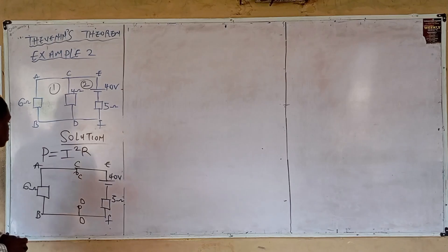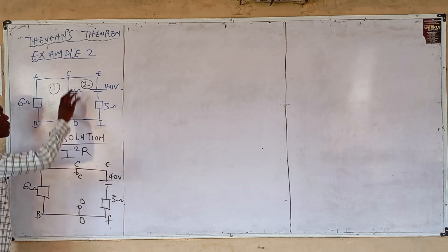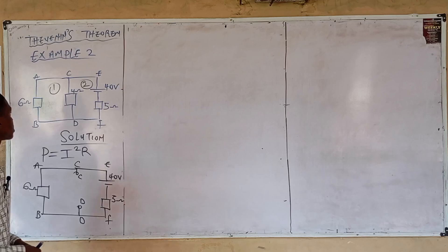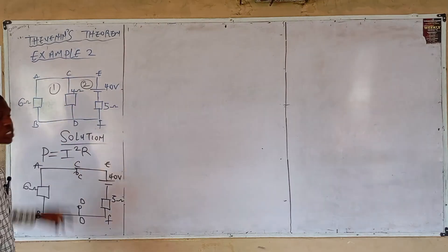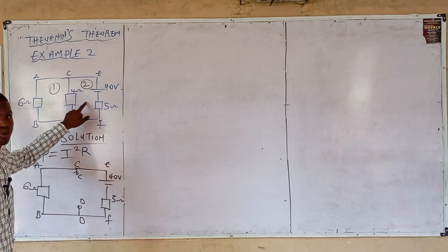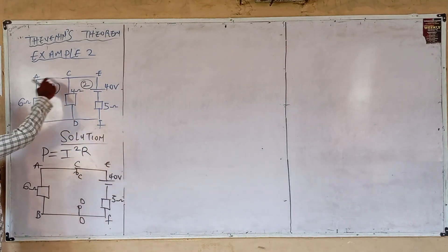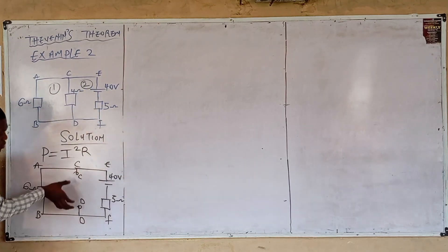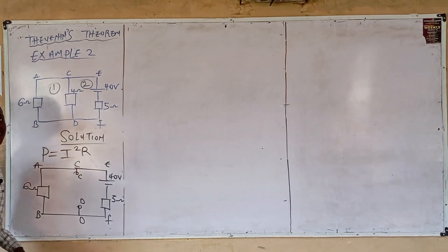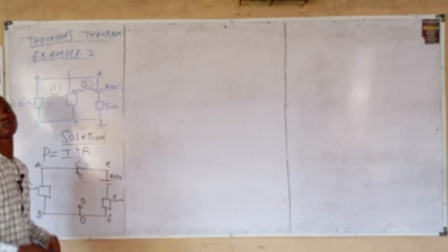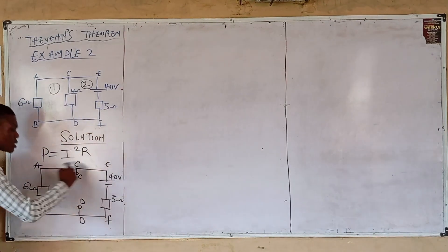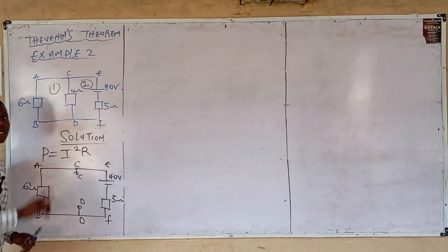Step 1: we've short-circuited the 4-ohm resistor, meaning it has been disconnected from the circuit. Initially we had loop one and loop two, but since the 4-ohm resistor is short-circuited, there is no longer a distinction between loop one and loop two — the whole thing is considered as one single circuit.